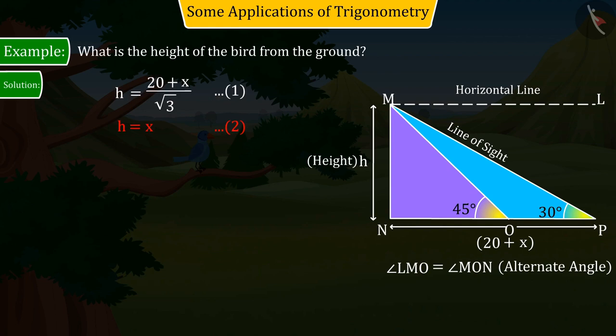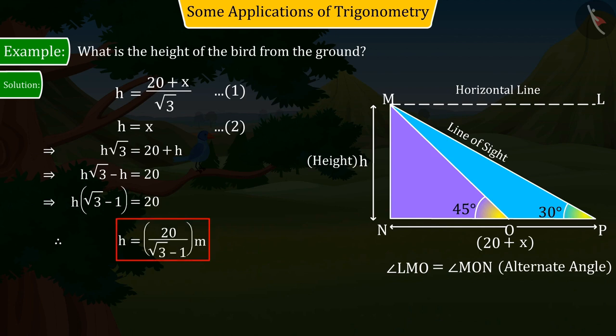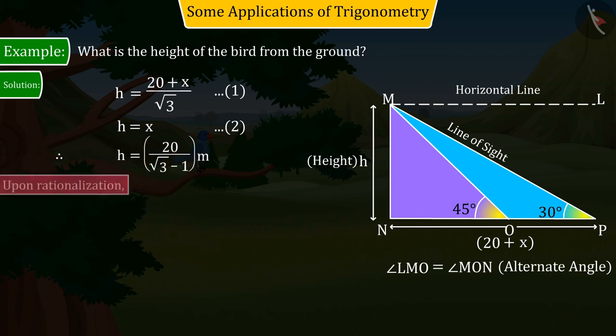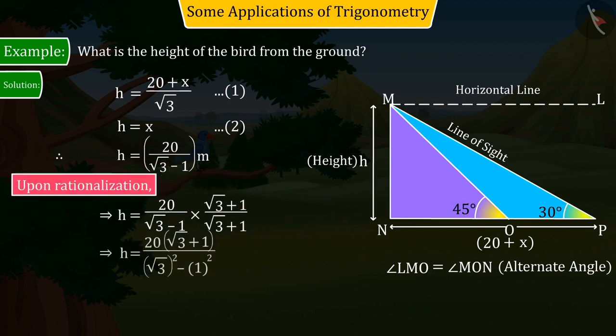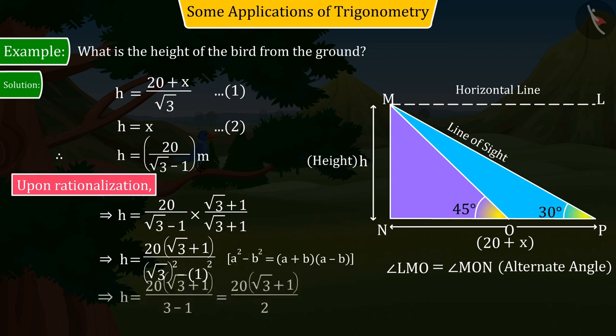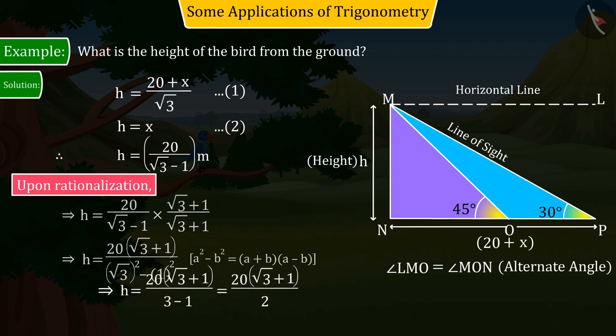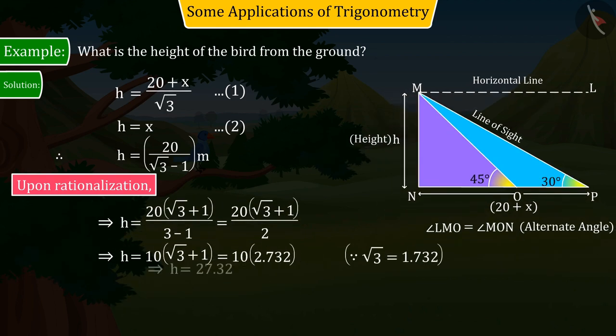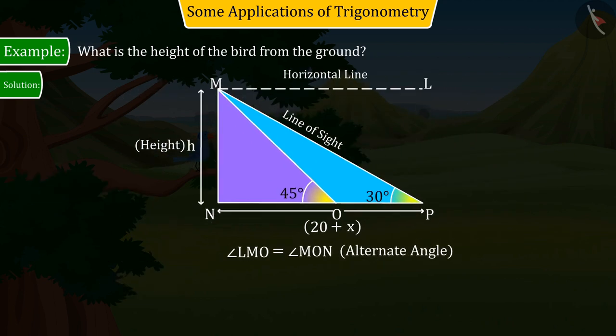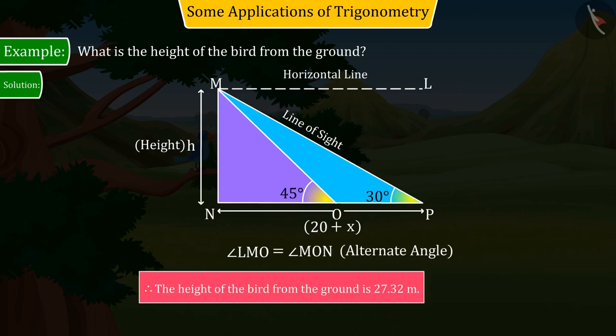Solving the equation by comparing 1 and 2, the value of H is obtained as 20 divided by square root 3 minus 1. Rationalization gives the value of H as 27.32. So, we can say that the height of the bird from the ground is 27.32 meters.